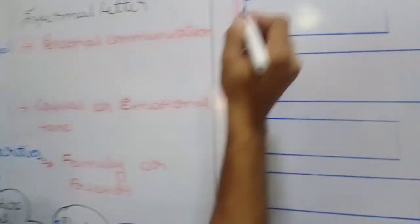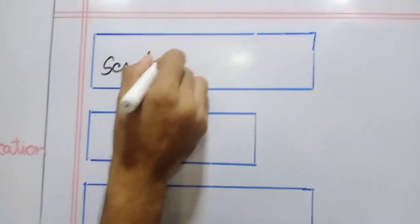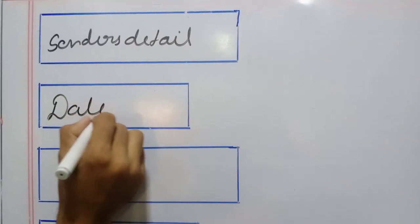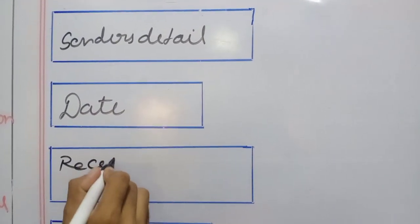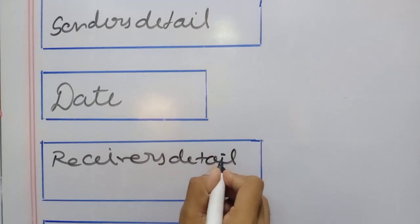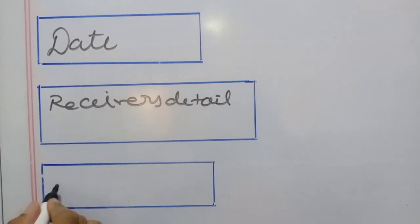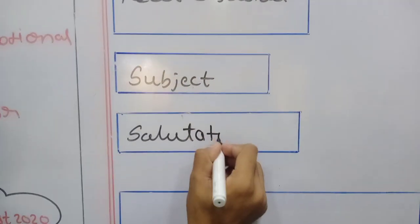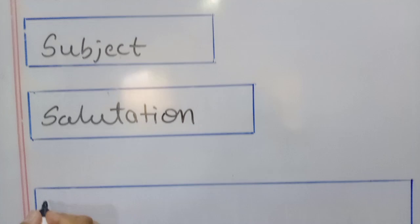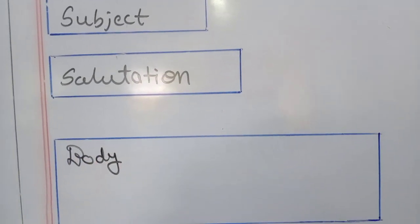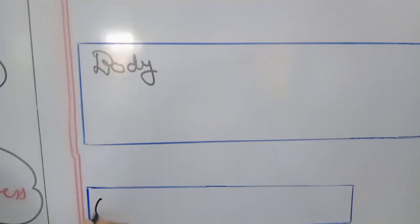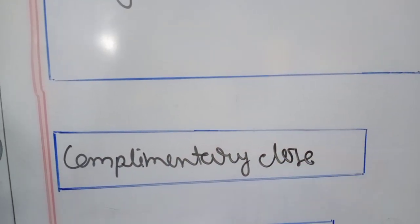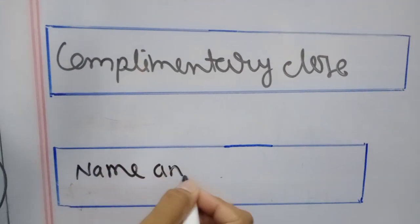As we learned, the first one is sender's detail, after that date, then the third one is receiver's detail. Then after receiver's detail we have to write subject, after subject salutation, then the body of the letter, and after that we have to write the complimentary close.